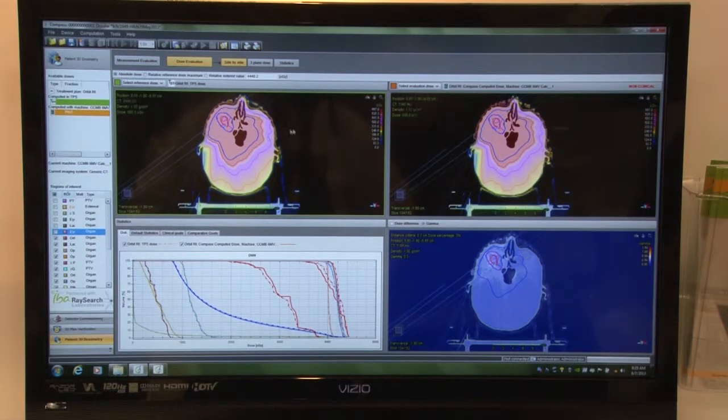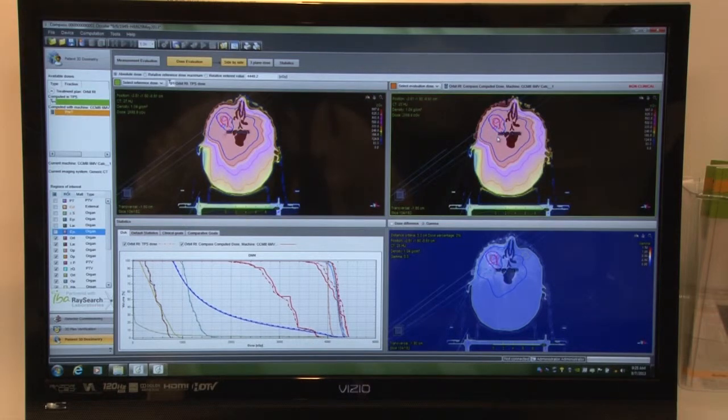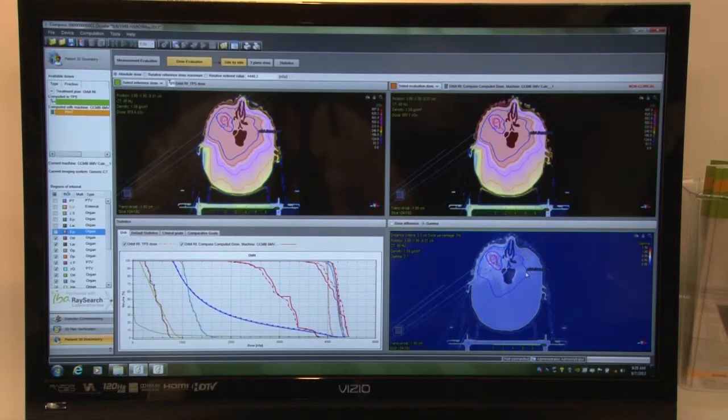So in this case, we could have the left quadrant being the TPS dose. In the right quadrant here, we have a measured influence and calculation through our collapse cone algorithm. We have the ability then to compare those two as well.